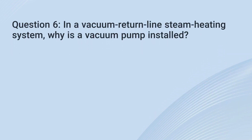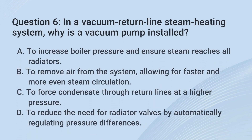Question 6. In a vacuum return line steam heating system, why is a vacuum pump installed? A. To increase boiler pressure and ensure steam reaches all radiators. B. To remove air from the system, allowing for faster and more even steam circulation. C. To force condensate through return lines at a higher pressure. D. To reduce the need for radiator valves by automatically regulating pressure differences.